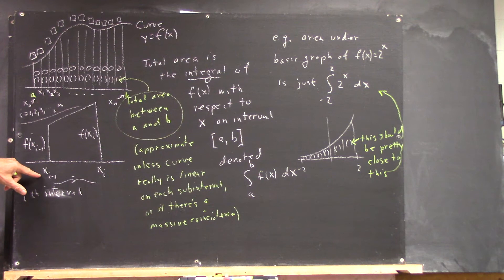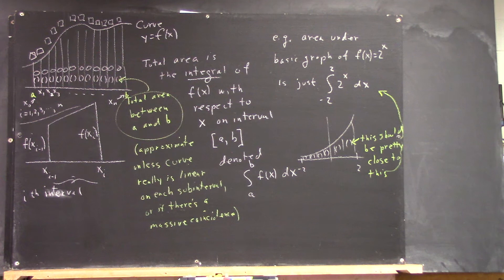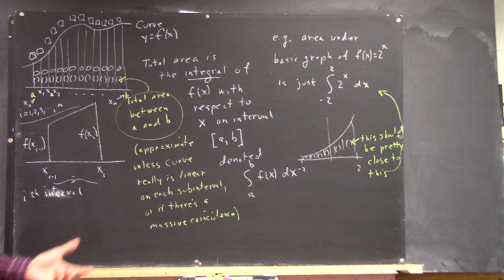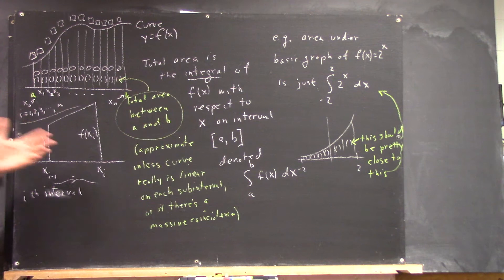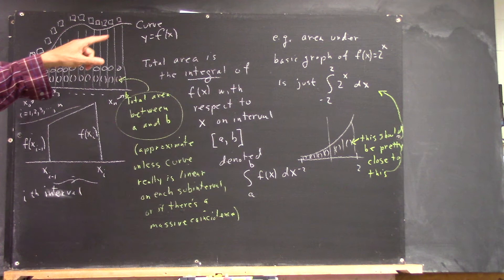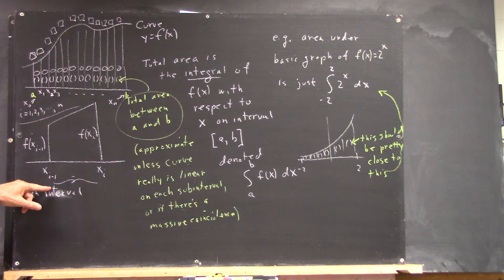Now, x i minus 1, x i. So you understand what we're talking about, right? I just want to make sure because that can be a confusing notation if you haven't seen it before. So when we start labeling our trapezoid, how high is this one? Well, if the function is f of x, then the value of the function when x is equal to x i minus 1 is f of x i minus 1, right?